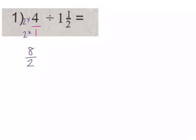Now I've got eight over two for my first fraction. For the second number, I also want it to look like a fraction — no mixed numbers, no whole numbers. I'm going to use the cartwheel method: multiply and then add. Two times one is two, plus one is three. That's my numerator, and the denominator stays the same. So I have eight halves divided by three halves.